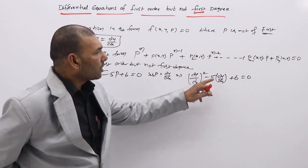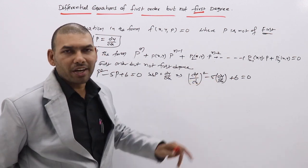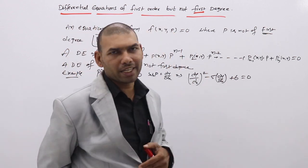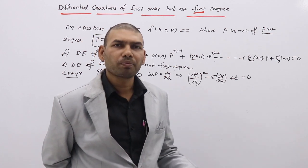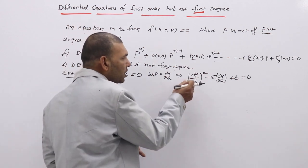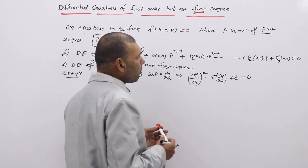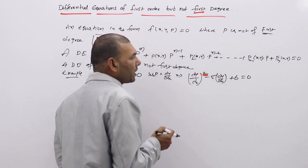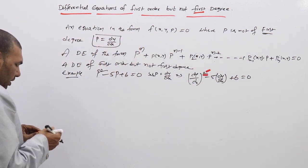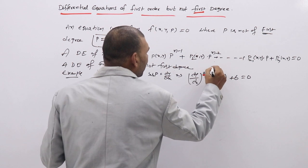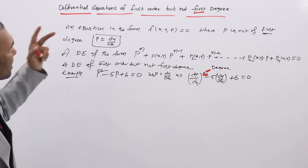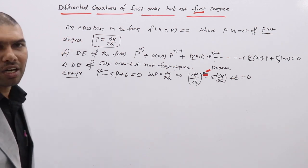So see here — the order of the DE is the highest derivative involved, which is dy/dx only, so order is 1. Degree means the exponent of the highest order derivative. The highest order derivative is dy/dx, and its exponent is 2, which denotes the degree of the DE. So order is 1 but degree is 2. This type of differential equation — of first order but not first degree — may exist in 4 types.